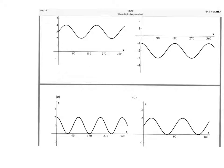Section 23, part 2. We're now going to look at some trig curves that have been shifted vertically up and down. These can be written, for example, in the form A sin Bx plus C.